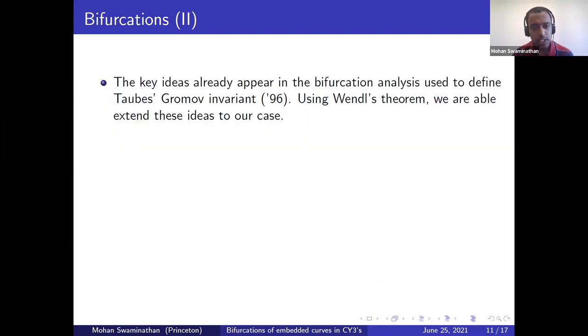Let me say a couple of words about the proof of this result. The key ideas actually already appear in the bifurcation analysis that is used to define Taubes' Gromov invariant from 1996, which was subsequently proved to be equal to the Seiberg-Witten invariant. And using Wendl's theorem in our case, we are able to extend these ideas to the branch cover case.